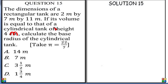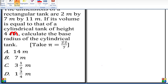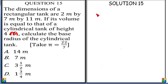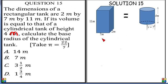So let's look at the two tanks, the rectangular tank and the cylindrical tank, something like this. And their volumes are equal. The dimension 2 by 7 by 11. This one has height 4 meters and radius is not known.